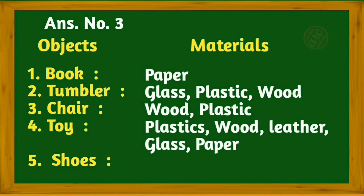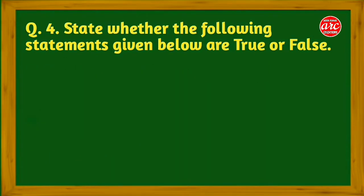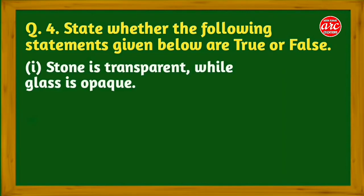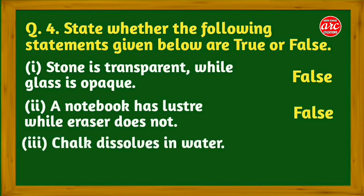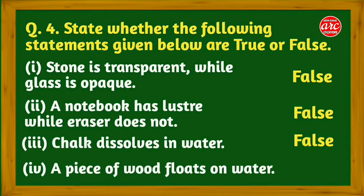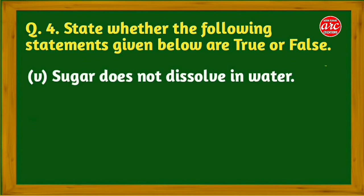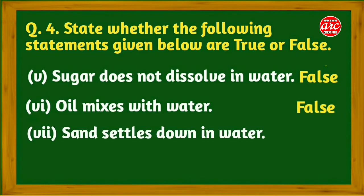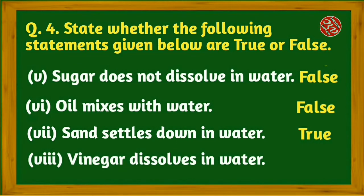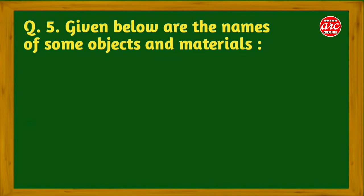Question number four: State whether the following statements given below are true or false. One: Stone is transparent while glass is opaque - false. Two: A notebook has luster while eraser does not - false. Three: Chalk dissolves in water - false. Four: A piece of wood floats on water - true. Five: Sugar does not dissolve in water - false. Six: Oil mixes with water - false. Seven: Sand settles down in water - true. Eight: Vinegar dissolves in water - true.